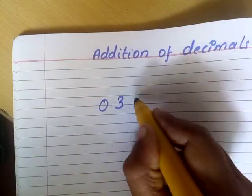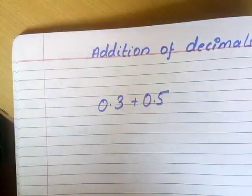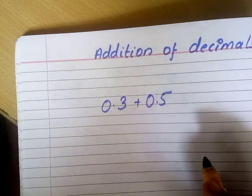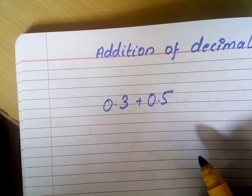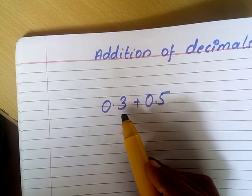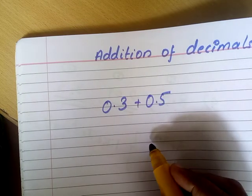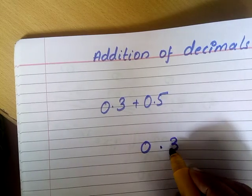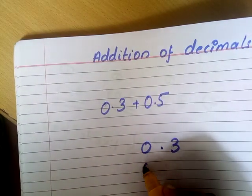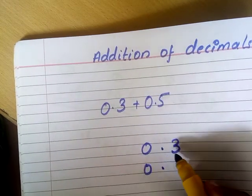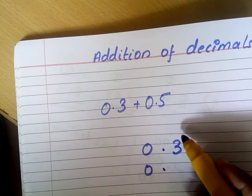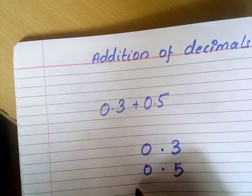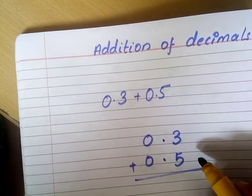0.3 plus 0.5. You need to be careful about the decimal points when you add decimals. So just like when we add whole numbers, place the digits according to the place value. Here both are like decimals, so write 0 in the whole number place, put the decimal point, then write 3. Under the whole number part write 0 again, insert the decimal point, and write 5 in the tenths place. I have placed the digits according to the correct place value.